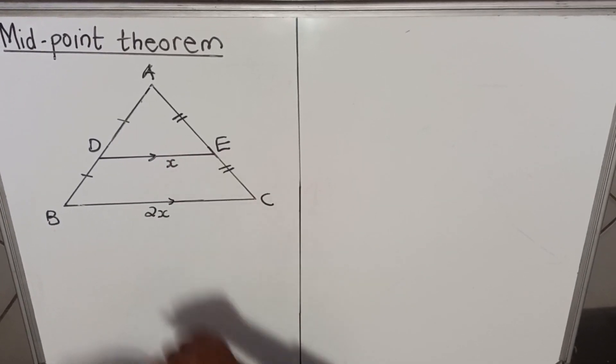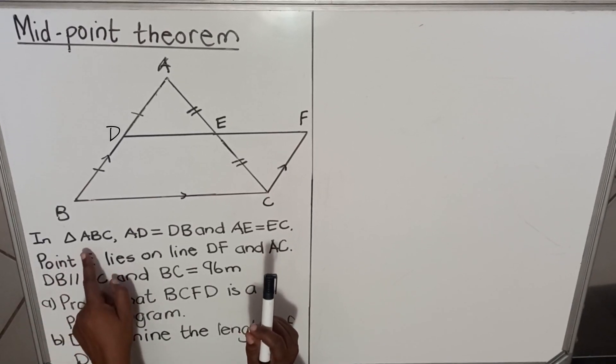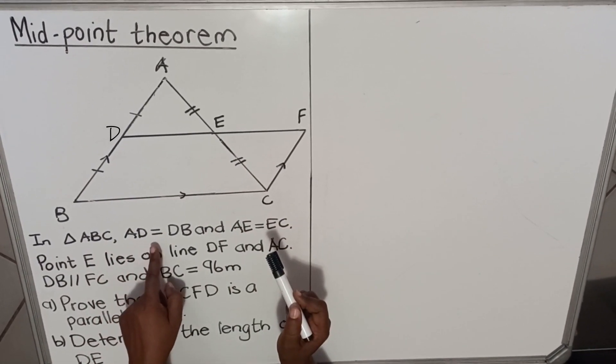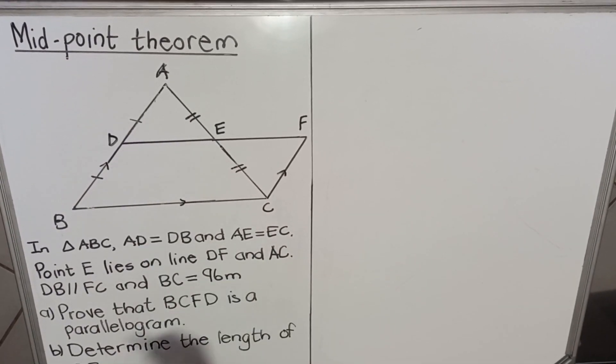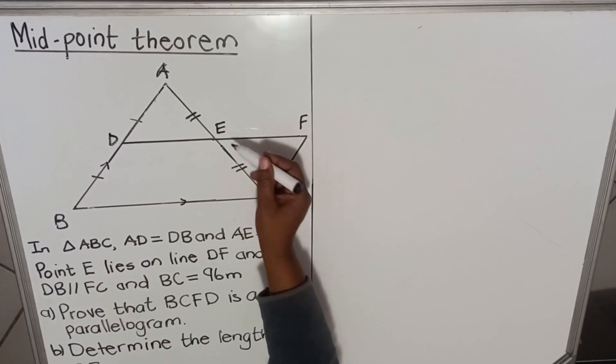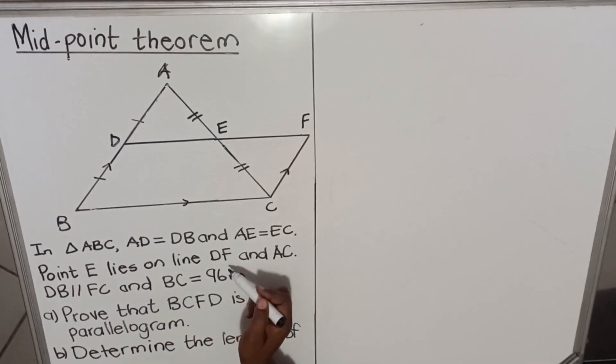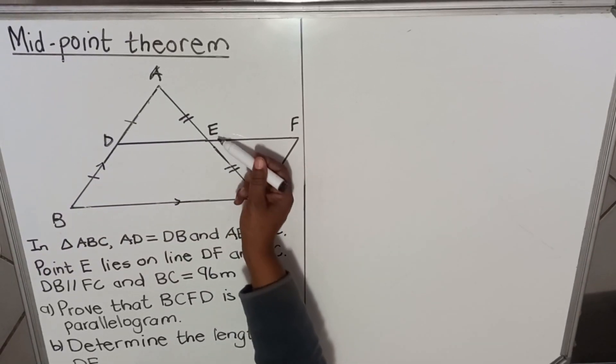Okay, let's look at an example. In our example we are given triangle ABC. This is the triangle ABC. AD is equal to DB, and AE is equal to EC. Point E lies on the line DF. This point E and AC, yes AC, point E, DF, point, right.